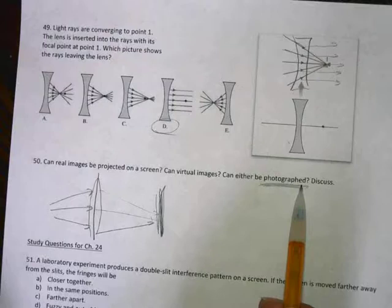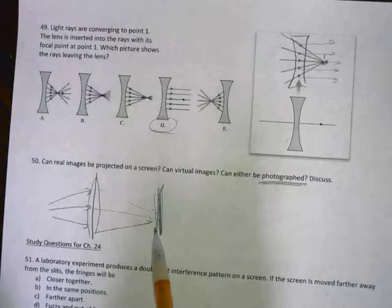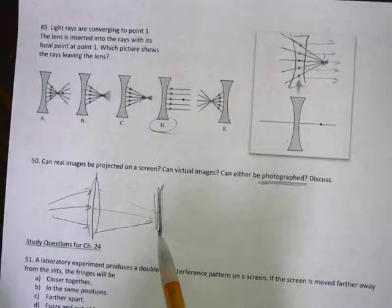So the reason that the photograph can see virtual images as well as real images is because it focuses both of them into real images. The same thing happens with your eye, right?